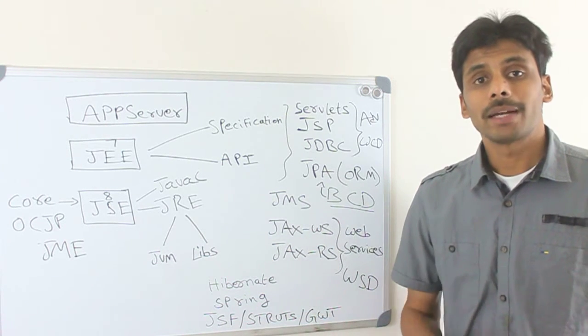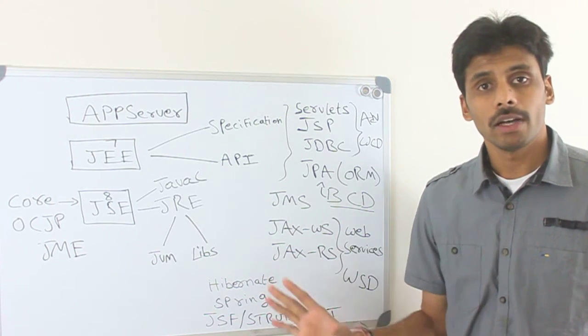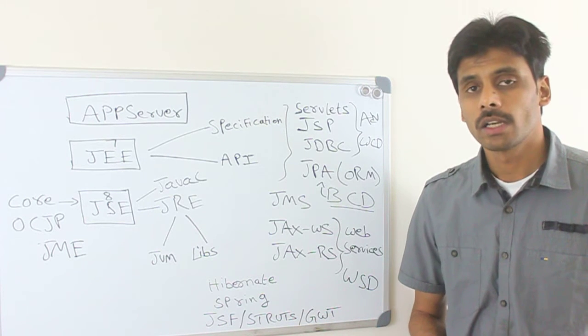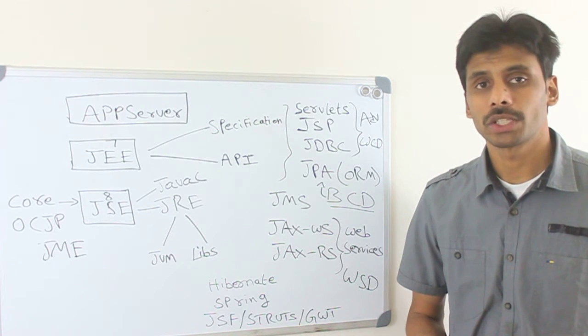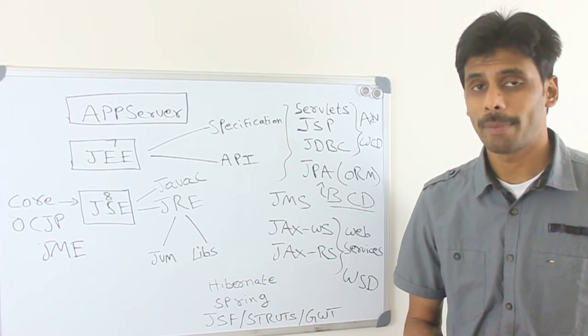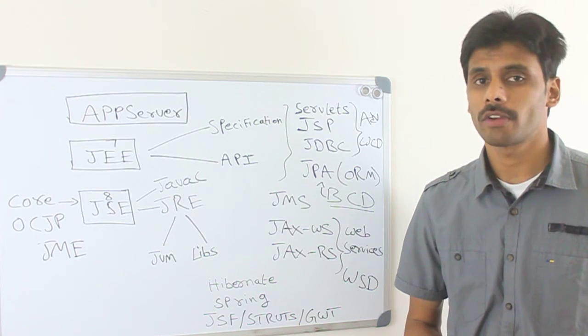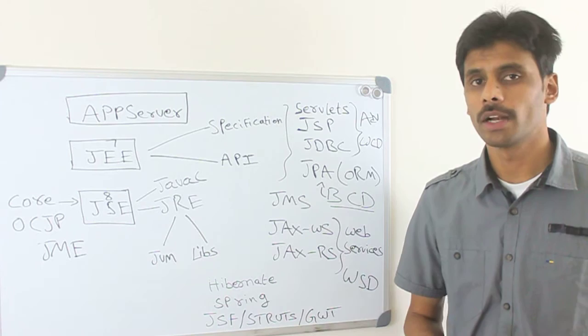As I said, we can only develop desktop applications using Core Java, once you have the Core Java skills. A very good example of a Java desktop application is OpenOffice, from Apache, which is very similar to Microsoft Office, but it is free and it is very cool and easy to use.